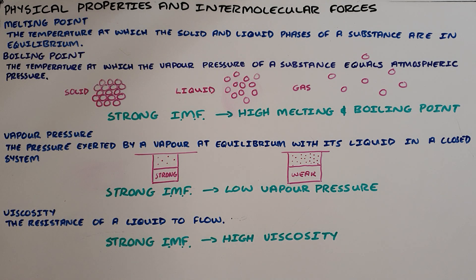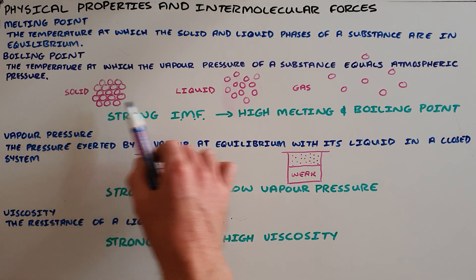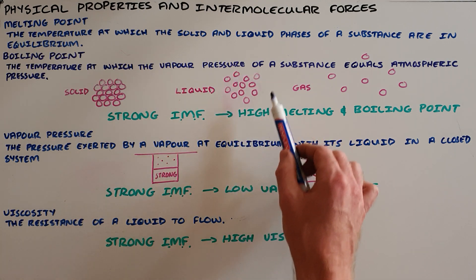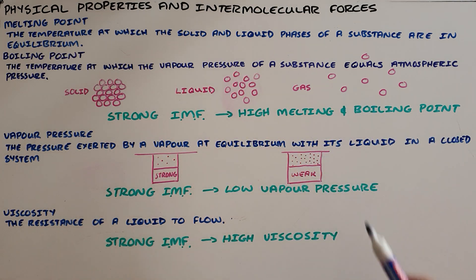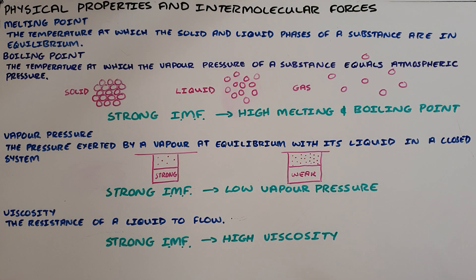In a solid, the particles are densely packed and fairly neatly arranged. In a liquid, they are still fairly densely packed, but the arrangement is random. In a gas, the particles have large distances between them, and there is absolutely no arrangement.